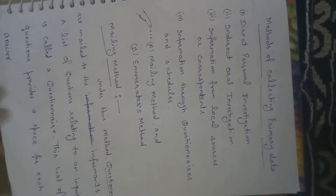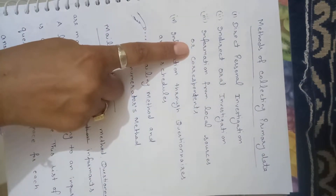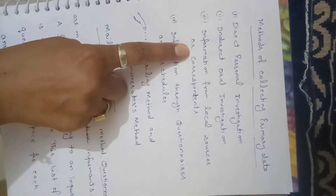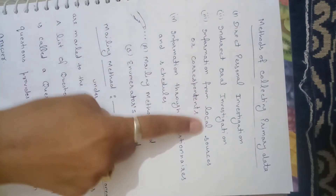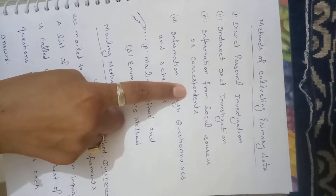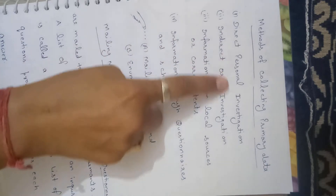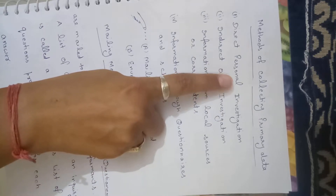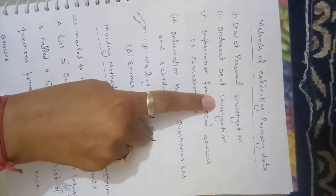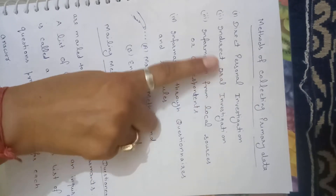Hello students. We were studying methods of collecting primary data. We covered three methods: direct personal investigation method, indirect oral investigation, and information from local sources and correspondence. In the direct personal investigation method, investigators personally get information and collect it. In indirect oral investigation, the investigator gets witnesses and collects information from them.